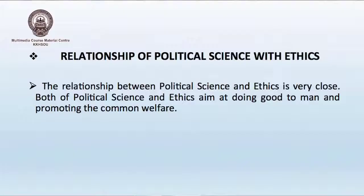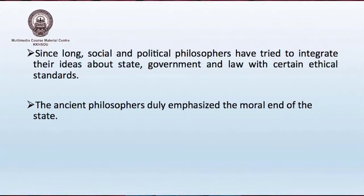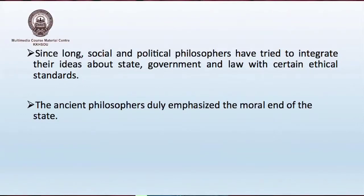Now let us discuss the relationship between political science and ethics. The relationship between political science and ethics is very close. Both aim at doing good to man and promoting the common welfare. The state was organized for maintaining law, order and morality. Laws should be enacted in such a way as to strengthen the moral beliefs of the state. Social and political philosophers have tried to integrate their ideas about state, government and law with certain ethical standards. Concern for human beings and human values is a fundamental aspect of modern day political science. The ancient philosophers duly emphasized the moral end of the state. In the ancient period, the Greek philosopher Plato put forward the theory of the ideal state, and Aristotle also said that the state exists for good life.